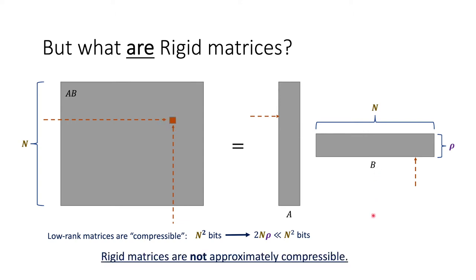So in this light, we can say that rigid matrices are not only not compressible, but they're not even approximately compressible. And this viewpoint will actually be quite helpful later on.